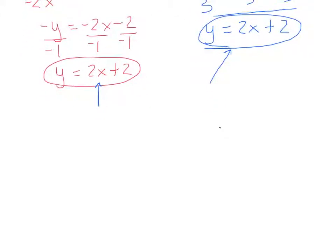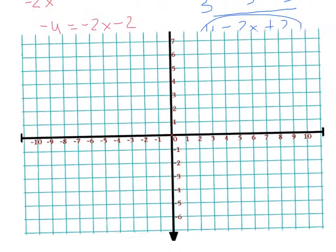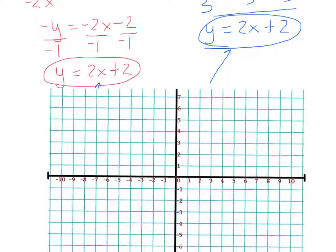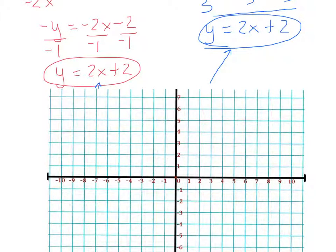And so what let's do is let's get a piece of graph paper and let's graph both of those. Now, they're not even two different lines, are they? They're the same line.